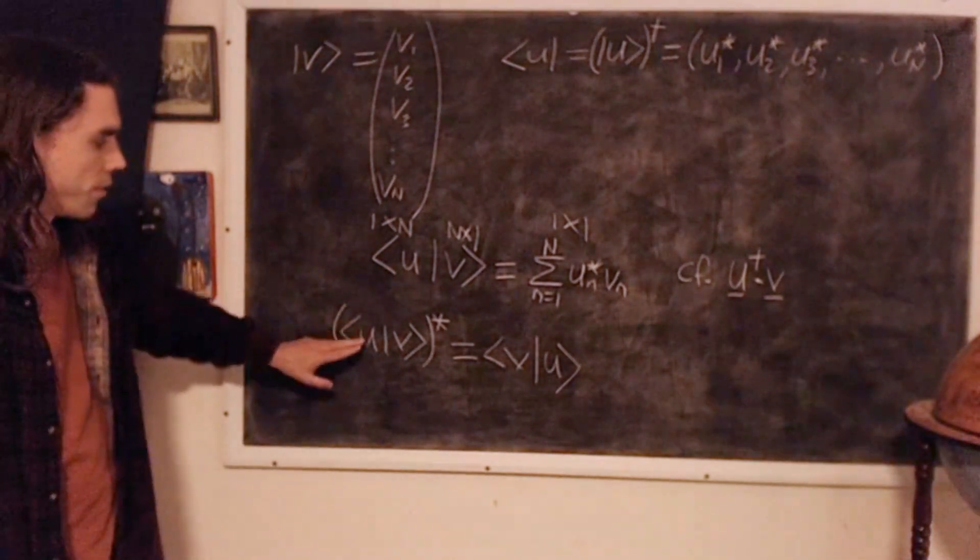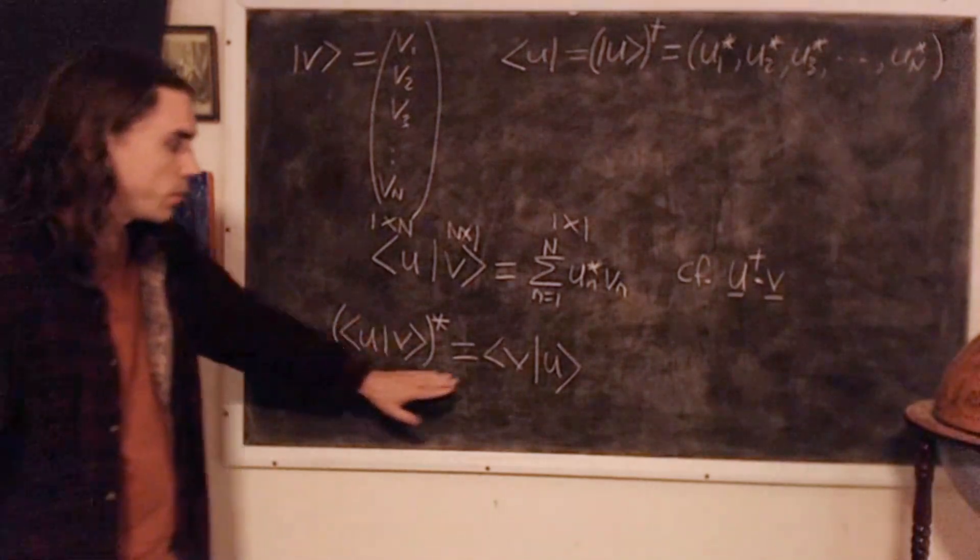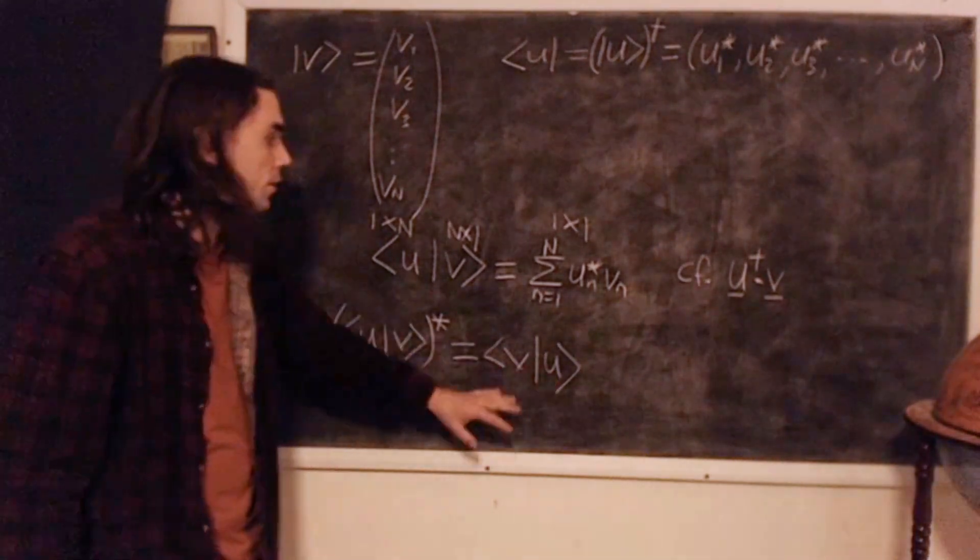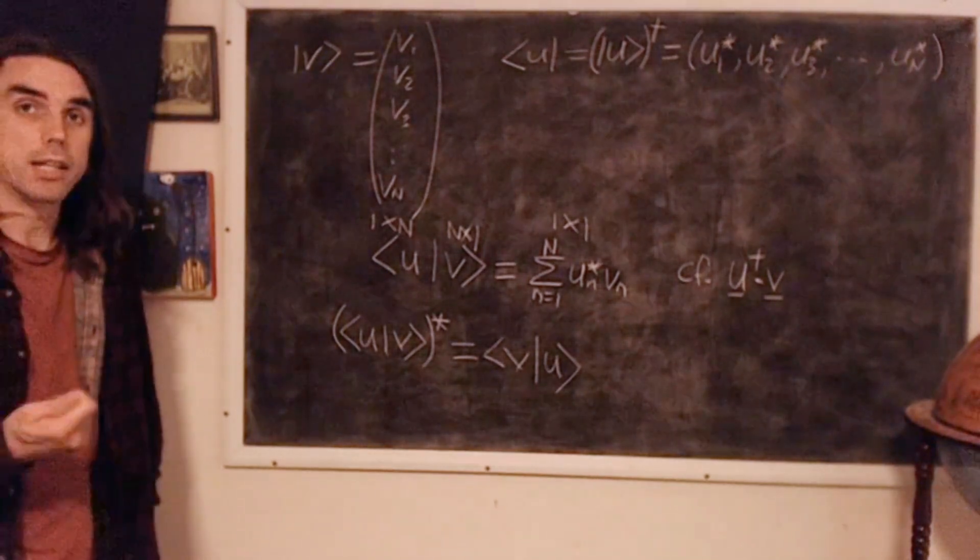So the complex conjugate of u inner product v, or bracket uv, is equal to v inner product u. And you can just check this explicitly in terms of the elements. So that's a nice convenience of this notation.